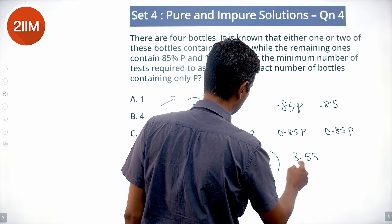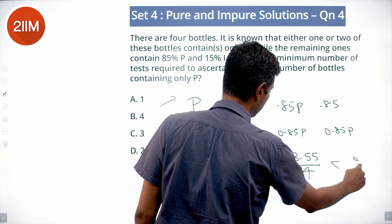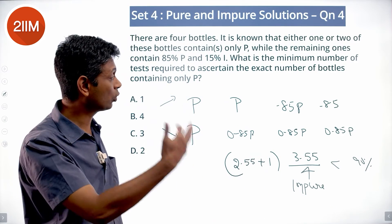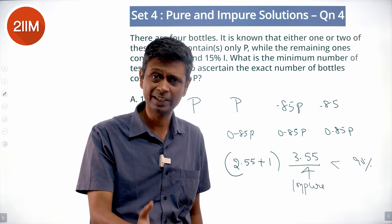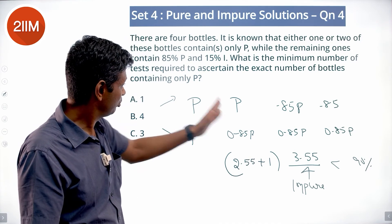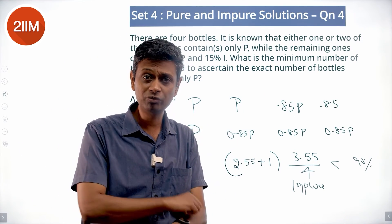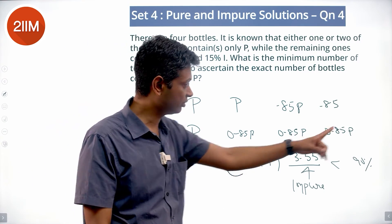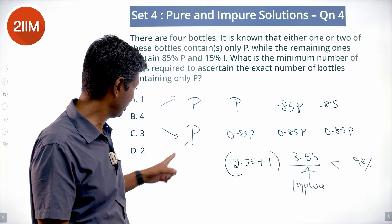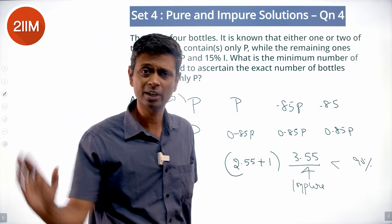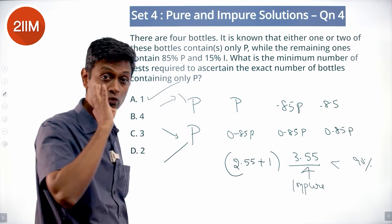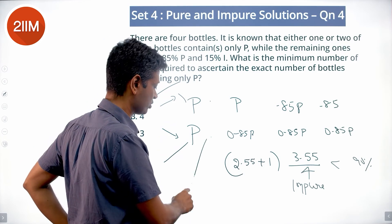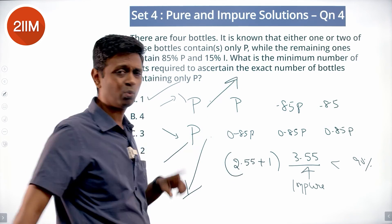For the two-P scenario: (0.85×2 + 1×2)/4 = (1.7 + 2)/4 = 3.7/4 = 92.5% P, which is pure — impurity won't be detected. So, take equal quantities of all four and test: if the outcome is pure, we have two P bottles and two 85%P bottles; if the outcome shows impurity, we have one P bottle and three 85%P bottles. With just one test we can ascertain the exact number of bottles containing only P.